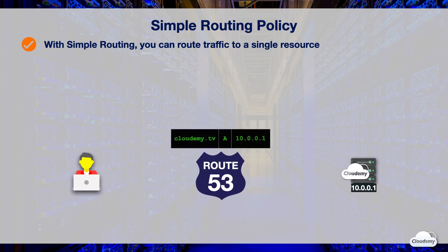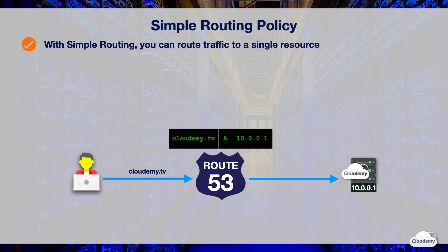Simple routing lets you configure standard DNS records without special Route 53 routing, such as weighted or latency-based routing. With simple routing, you can route traffic to a single resource. For example, you can use simple routing to route traffic to your website hosted in S3, or to the web server hosted on an EC2 instance.